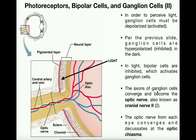The axons of the ganglion cells converge and become the optic nerve, which is also cranial nerve number two, or CN II. There is an optic nerve from each eye — we have a left one and a right one. Both of those optic nerves are going to converge and decussate at the optic chiasma.